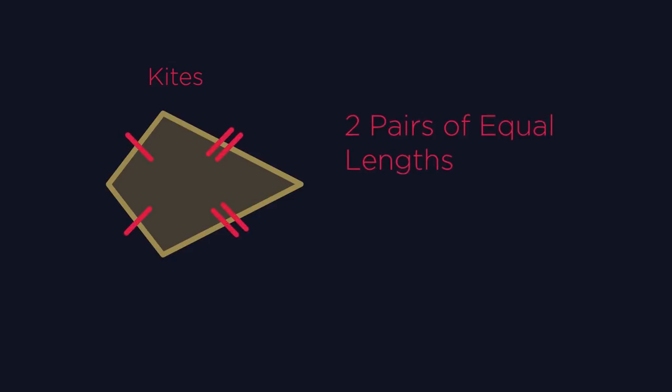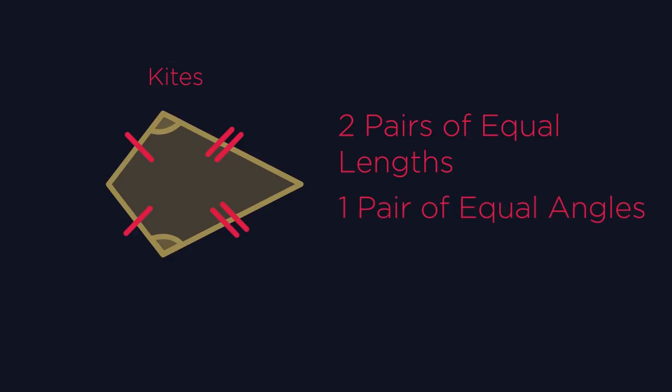They have two pairs of sides that are equal in length. They always have one pair of equal angles. And they're not so important, but worth mentioning. The diagonals cross at 90 degrees.